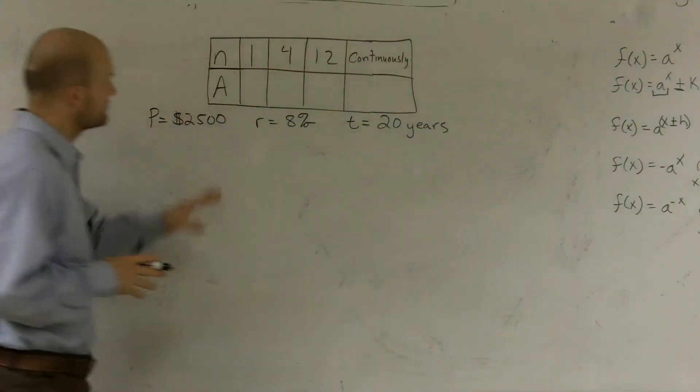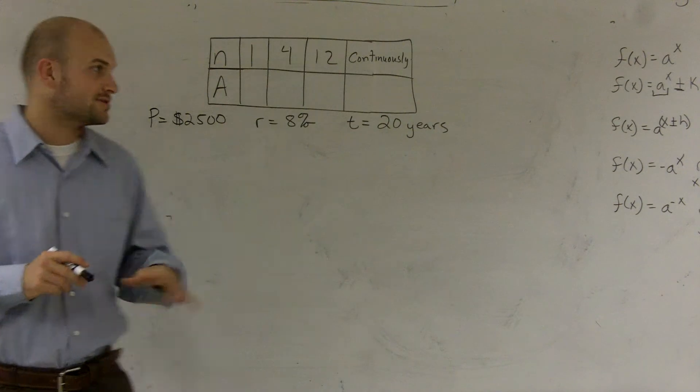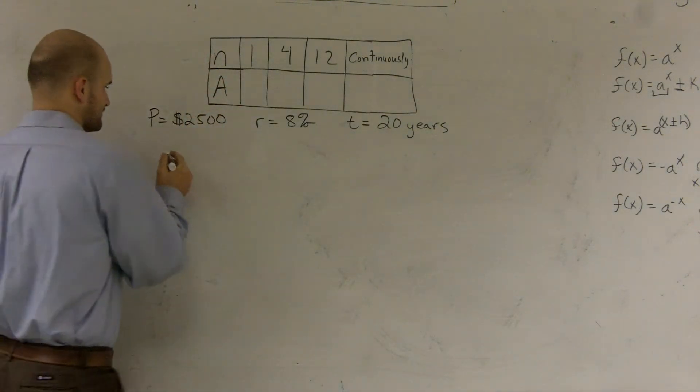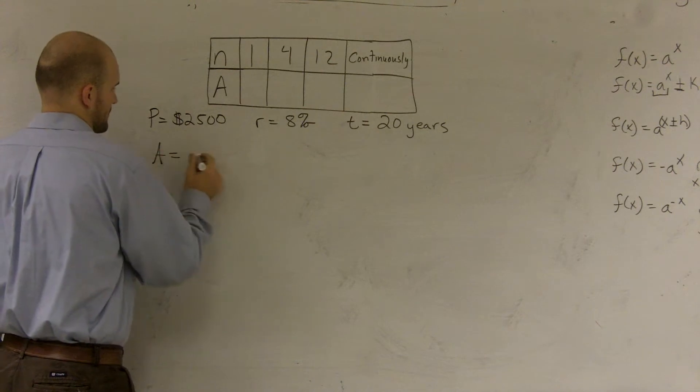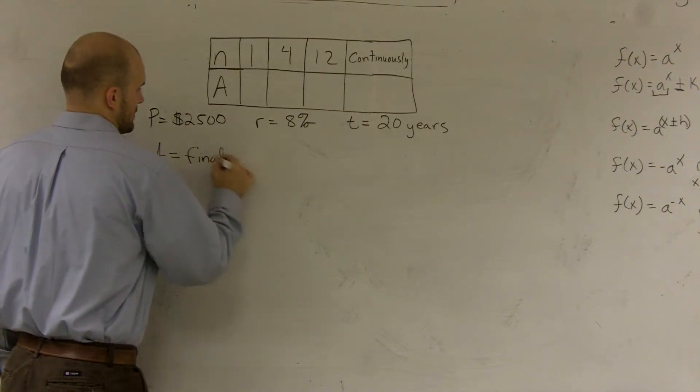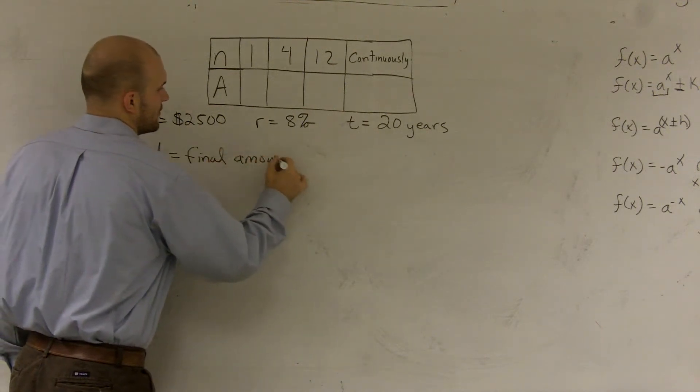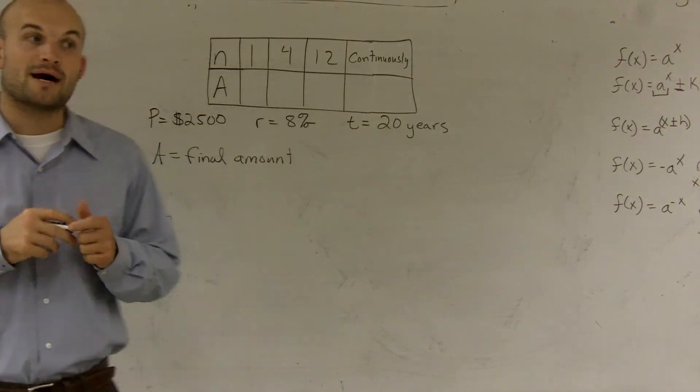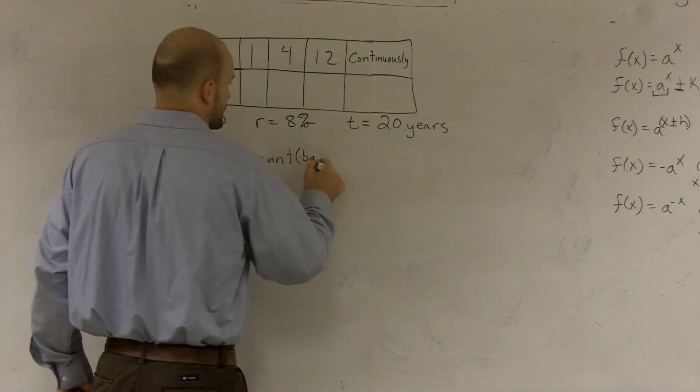What they're asking us to do is define the value of A, which is going to be our final amount. So what I'm going to do is A is going to be my final amount. And when dealing with A equals final amount, we also like to write in maybe final amount or final balance sometimes is a good word.